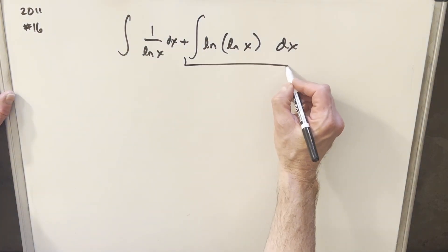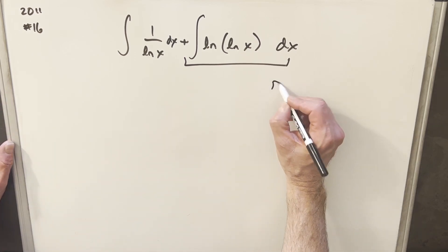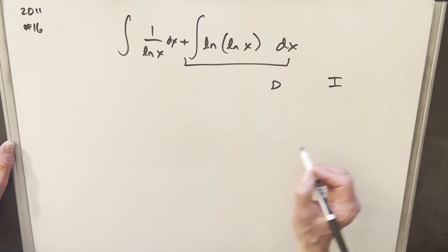And what I'll do is focus on just this right integral. We'll use integration by parts on this. I'll do the DI method, so we'll set up two columns for tabular integration, one to differentiate, one to integrate.